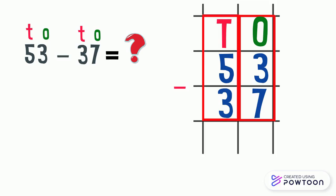Now we can start subtracting starting from the ones place column. We have three ones. We want to take away seven ones. Three minus seven is impossible.